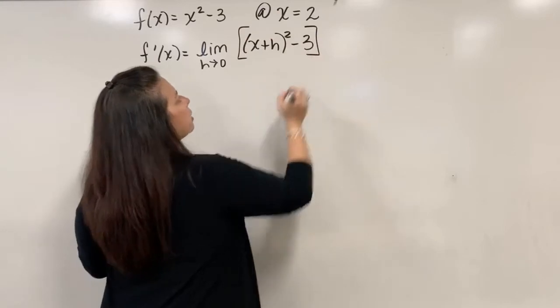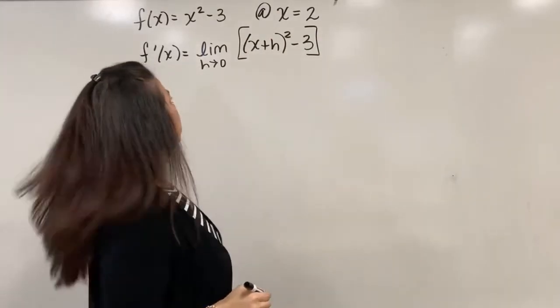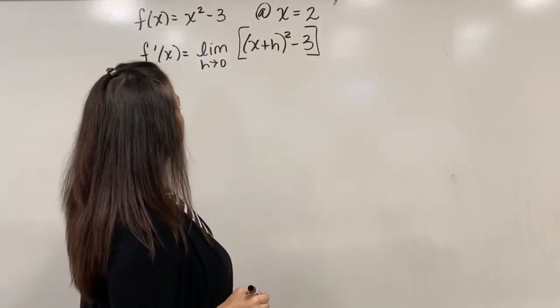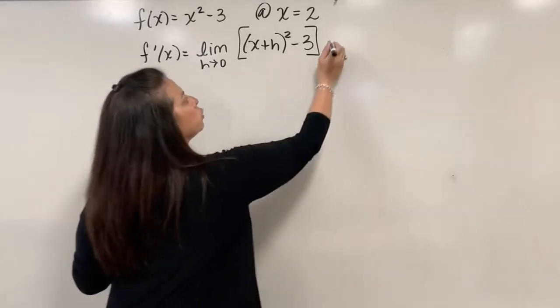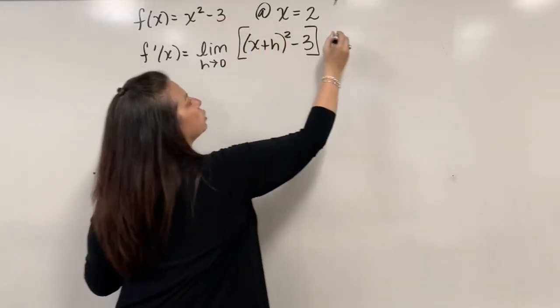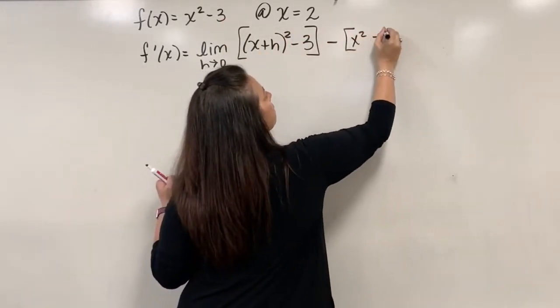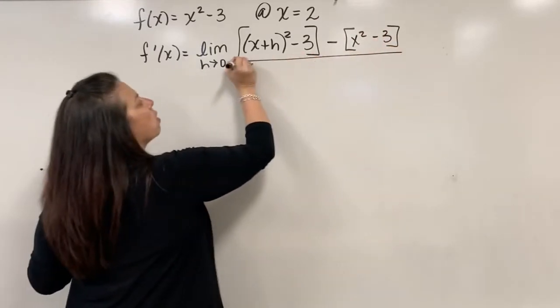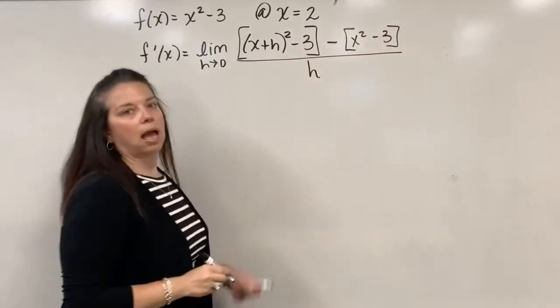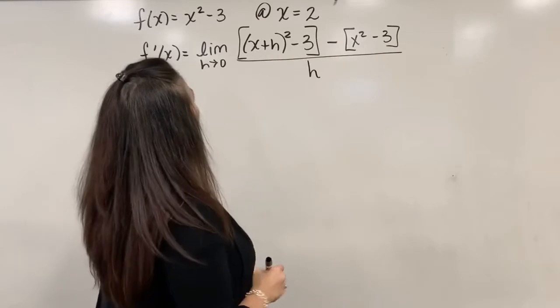So I have (x + h) squared minus 3. This is all my f of x plus h portion of my derivative definition. And now I will subtract off the original function, x squared minus 3. And of course, all of that will be divided by our h.